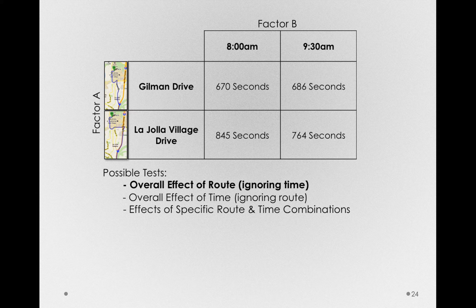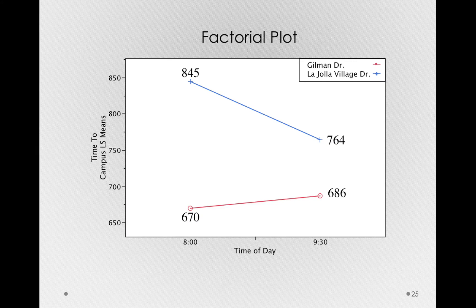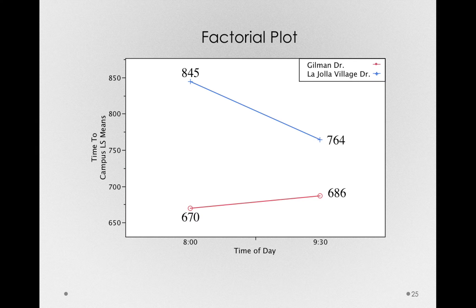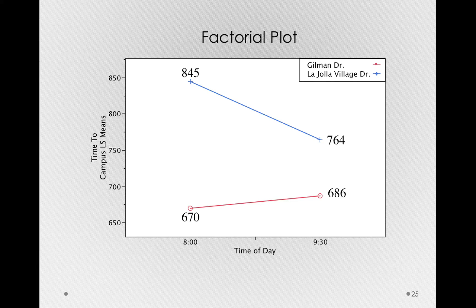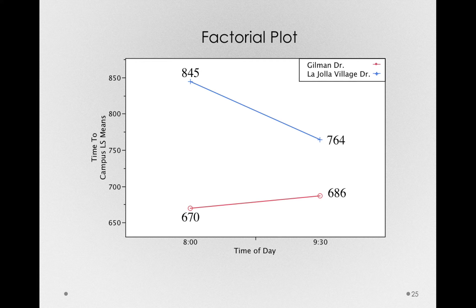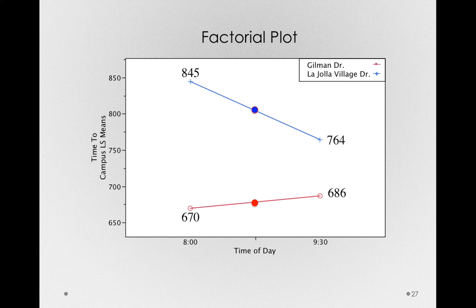Let's start with the overall effect of route, ignoring time. Now what we're really saying here is what is the overall difference between the routes? Now a handy way to look at this in a factorial plot is simply to take the midpoint of each of the lines. Notice that time of day is our x-axis, so if we're ignoring time of day, the midpoint in each of these lines is simply the average of the two different time points.